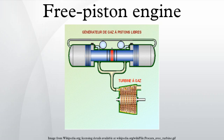A free piston engine is a linear, crankless internal combustion engine in which the piston motion is not controlled by a crankshaft but determined by the interaction of forces from the combustion chamber gases, a rebound device, and a load device. The basic configurations are commonly known as single piston, dual piston, or opposed pistons, referring to the number of combustion cylinders. The free piston engine is in practice restricted to the two-stroke operating principle, since a power stroke is required every fore and aft cycle.